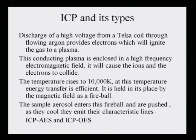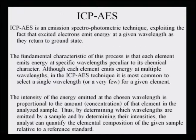What is shown in ICP-AES and ICP-OES: both are emission spectroscopic methods. ICP-AES is an emission spectroscopic photometric technique exploiting the fact that excited electrons emit energy at a given wavelength as they return to the ground state. When an atom gets excited by absorbing light, it goes to a higher excitation state, but it cannot remain there for too long — it comes back to its ground state by emitting light, and it is this emitted light which corresponds to the amount that was absorbed, depending on the molecular species present.